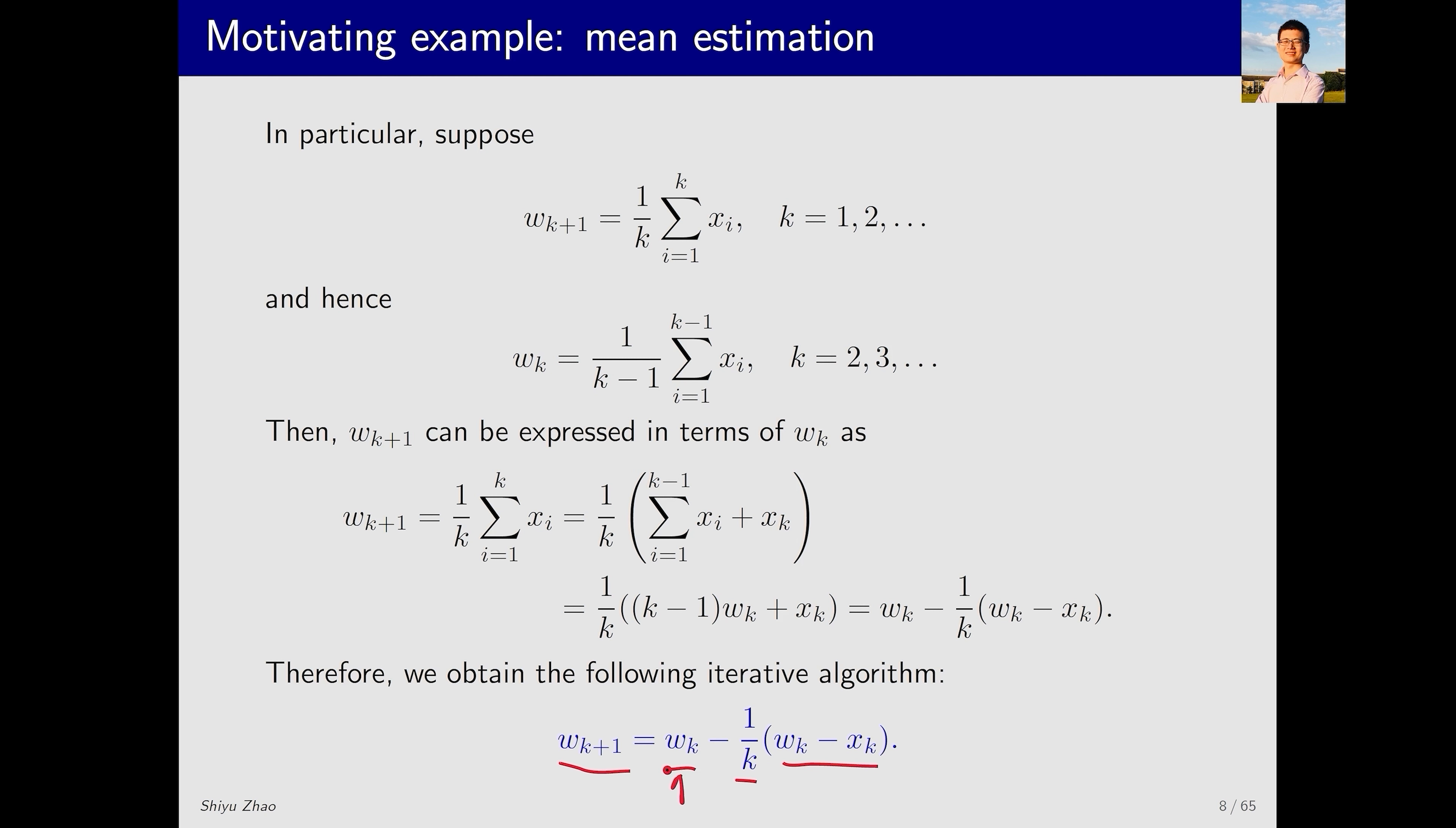For example, if we have calculated w_k at the previous step and we get a new sample x_k, then we can use this equation to get w_{k+1}. We do not need to summarize all the previous k samples and then calculate the average again.